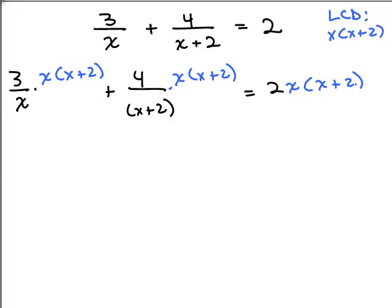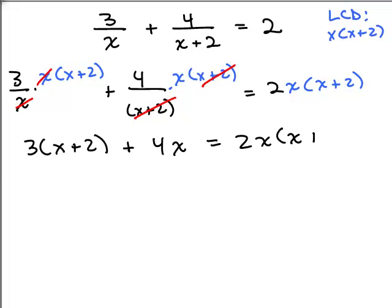And then we see if anything cancels, which, of course, anything that was a fraction should cancel if you multiply by the least common denominator. So the x's cancel here. The x plus 2's cancel here. And there is no fraction on the right, so nothing cancels.